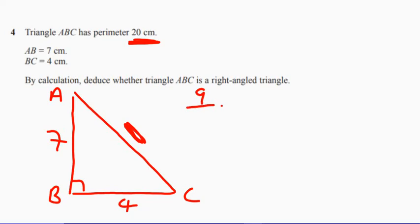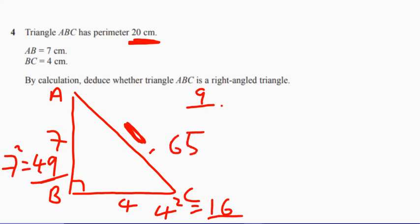But if it's a right angle triangle, let's find out what it is. So let's use our Pythagoras. Four squared is 16, seven squared is 49, so if we add these bits together we get 65, and we take the square root of that. So is that equal to 9? No, it's not, it's not equal to 9.